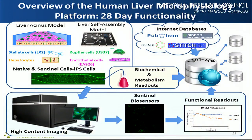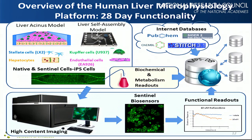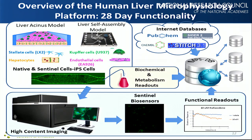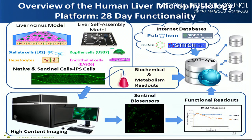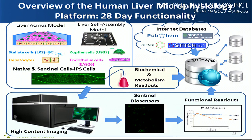We've been developing in parallel two different model systems: the layered liver acenus model and the liver self-assembly model. In the layered model, we physically layer the cells in the right structure. In the self-assembly model, we put the cells together in the right proportions and let them evolve and form their own structure, which has been quite remarkable. We started with primary human hepatocytes, using human cell lines for the other three cell types — endothelial cells, Kupffer cells, and stellate cells — in the first phase, and are now identifying primary cells for those types.